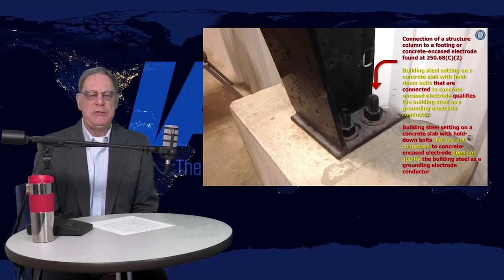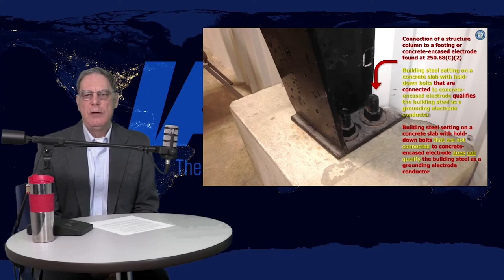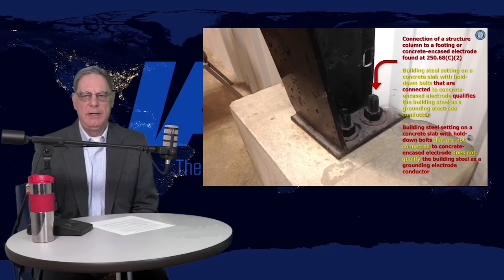250.52(A)(3) says this is connected to an electrode where the J-bolts, the hold-down bolts, are in fact directly connected to the concrete encased electrode, not just embedded in the concrete. That's the key here. They've got to be directly connected.